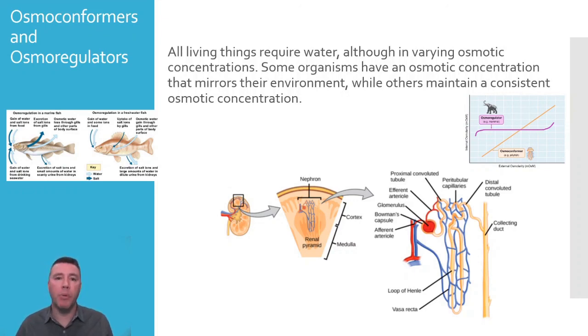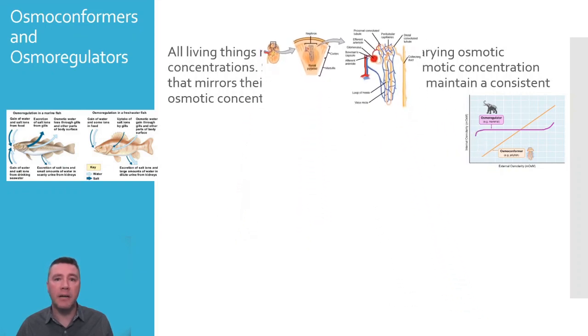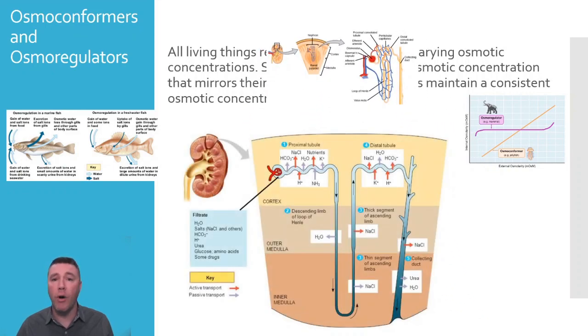Vertebrates, like mammals, birds, and reptiles, rely on kidneys for that function. The nephron is the functional unit of a kidney and beautifully illustrates a variety of transport mechanisms, including osmosis. Depending on the size of the organism and the size of the kidneys, a kidney contains thousands or even millions of these nephrons.